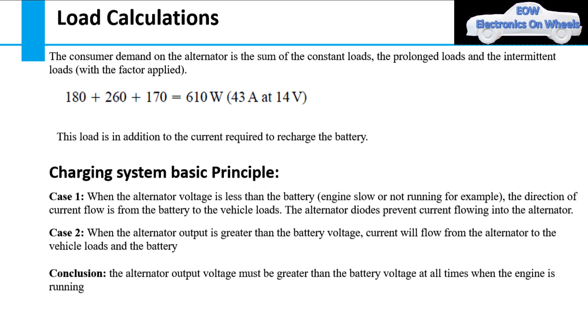As we discussed earlier, demand on alternator is the sum of constant loads, the prolonged loads and the intermittent loads. If you add all loads values, 180 plus 260 plus 170 equal to 610 W which is 43 Amps at 14 V. This load is in addition to the current required to recharge the battery.